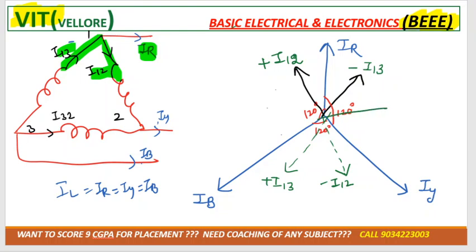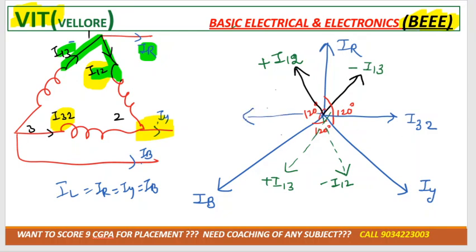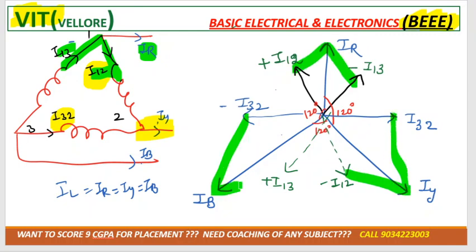For line current IY, the two phase current components are I12 and I32. I12 is already drawn; I32 needs to be added as a straight line extended to give minus I32. The angle between the line current and the phase current is always 30 degrees — this completes the delta phasor diagram.